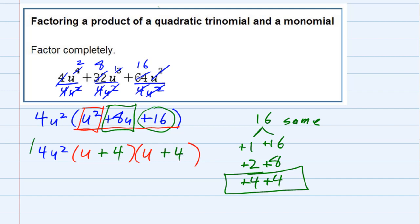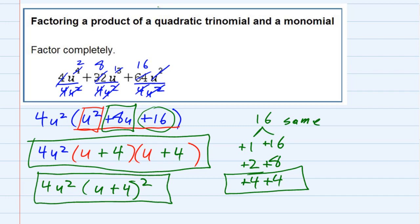So we can either put it in in this answer, or you may notice that the last two binomials are the same, so we could also write it as 4u squared and then u plus 4 quantity squared to represent both of those u plus 4s. So either one of these is acceptable.